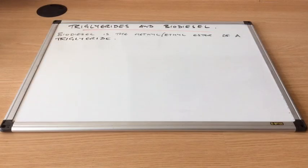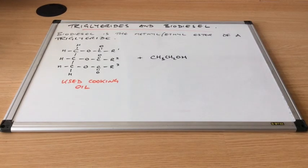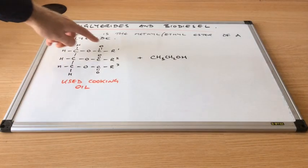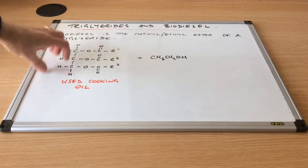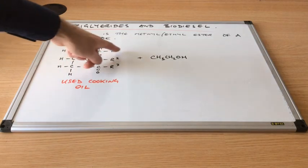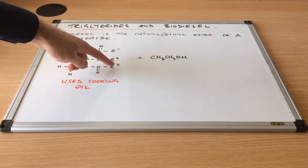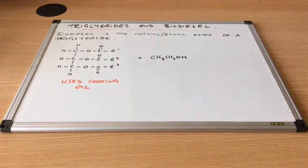The final industrial application of triglycerides is to do with biodiesel. So you've got it written up on the board there. Biodiesel is the methyl or ethyl ester of a triglyceride. So I've used a generic representation of a triglyceride here. So I've got the glycerol part here and then the ester bit here. So I've got three different R groups, which would be typical in a natural molecule.